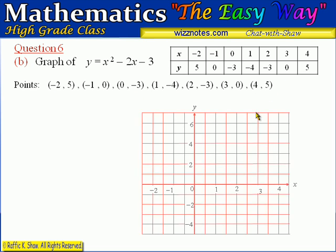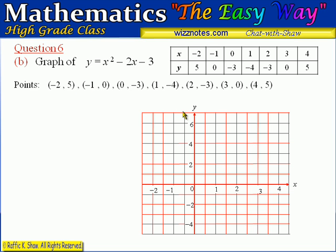Based on the required scale, we set up our grid where each grid line represents 1 centimeter — so 2 centimeters equals 1 unit on the x-axis and 1 centimeter equals 1 unit on the y-axis. We now plot all the points on this grid.